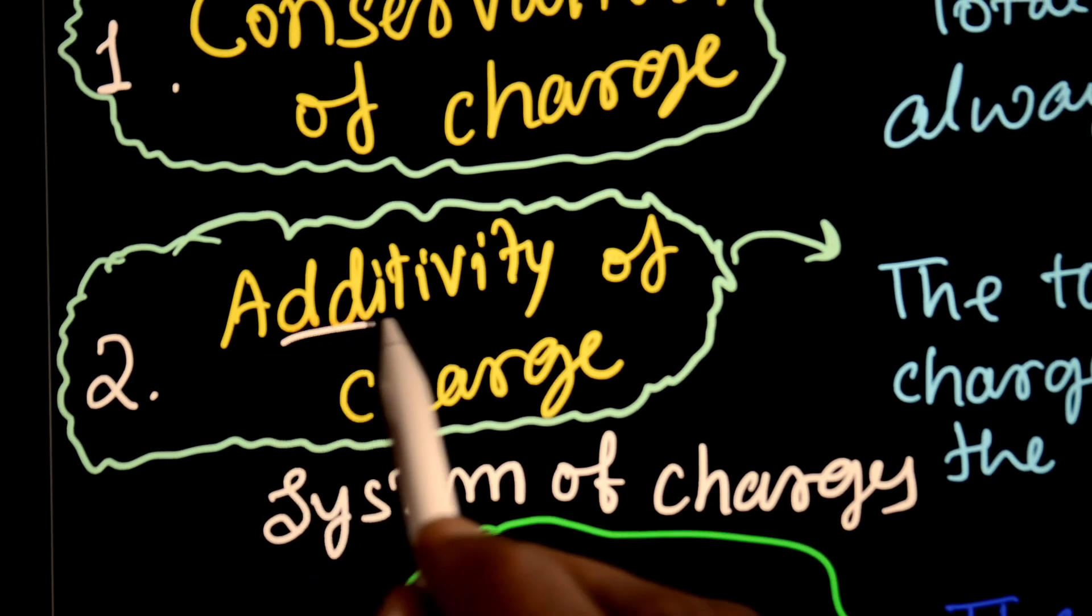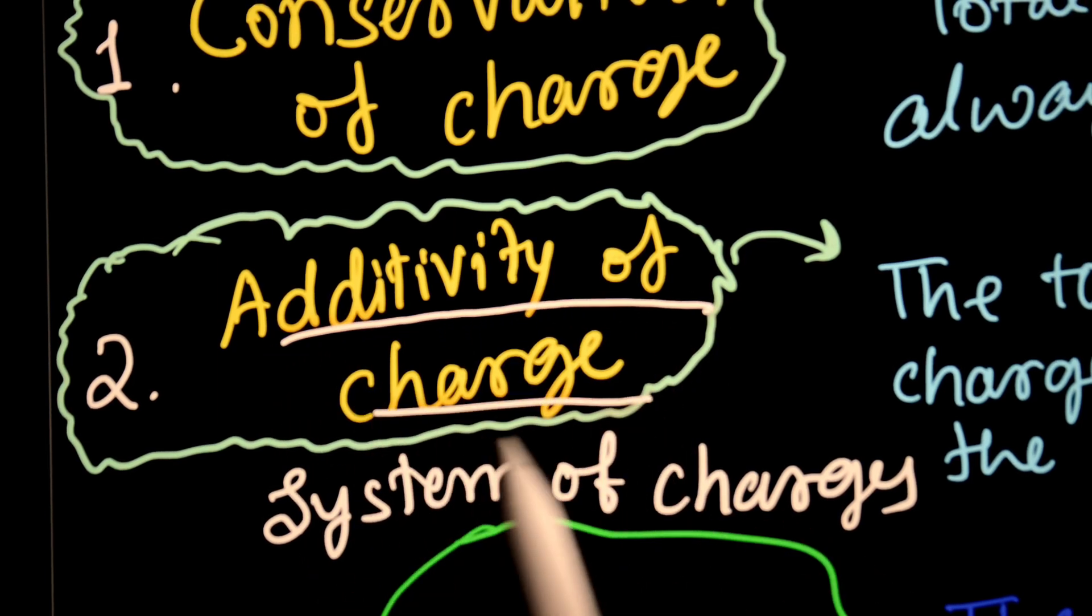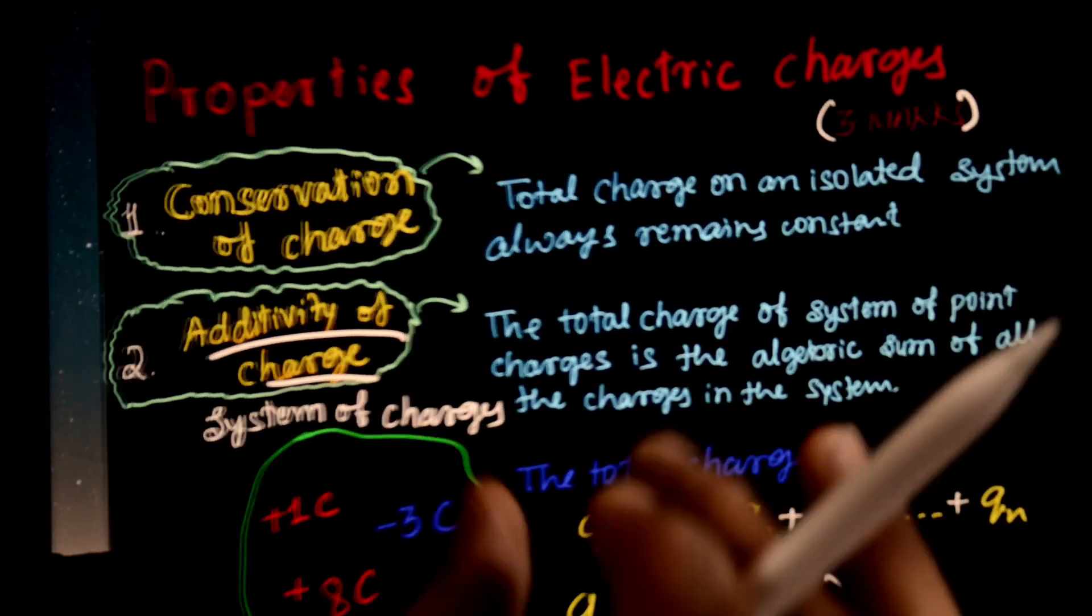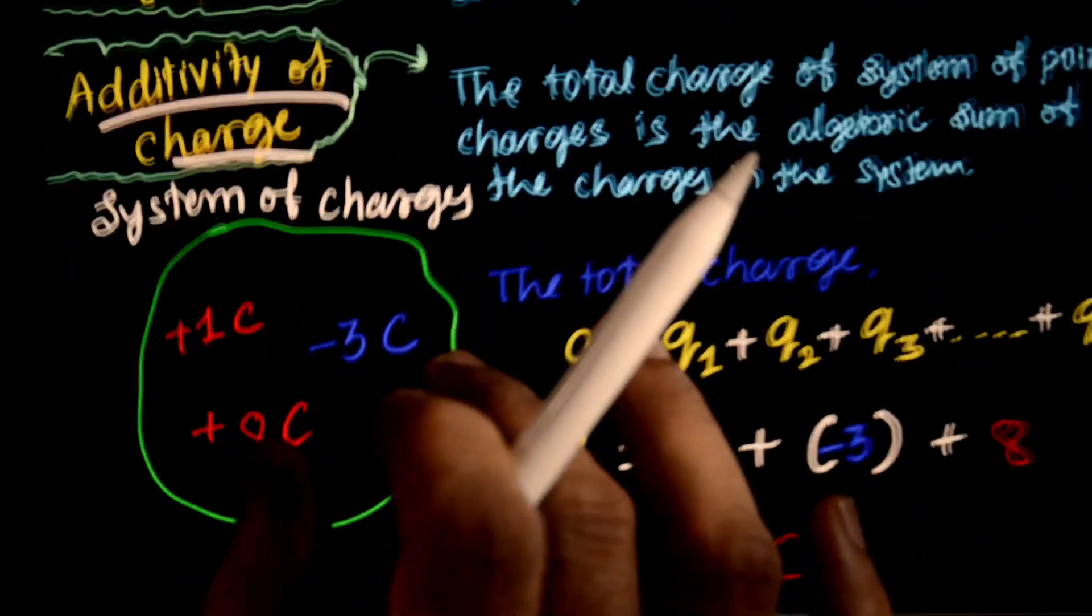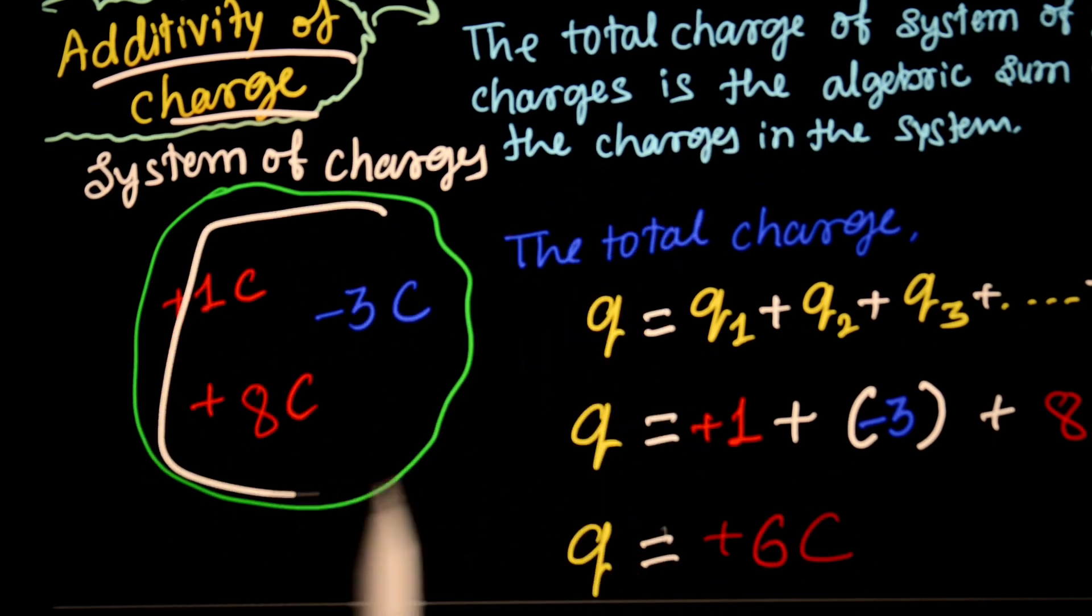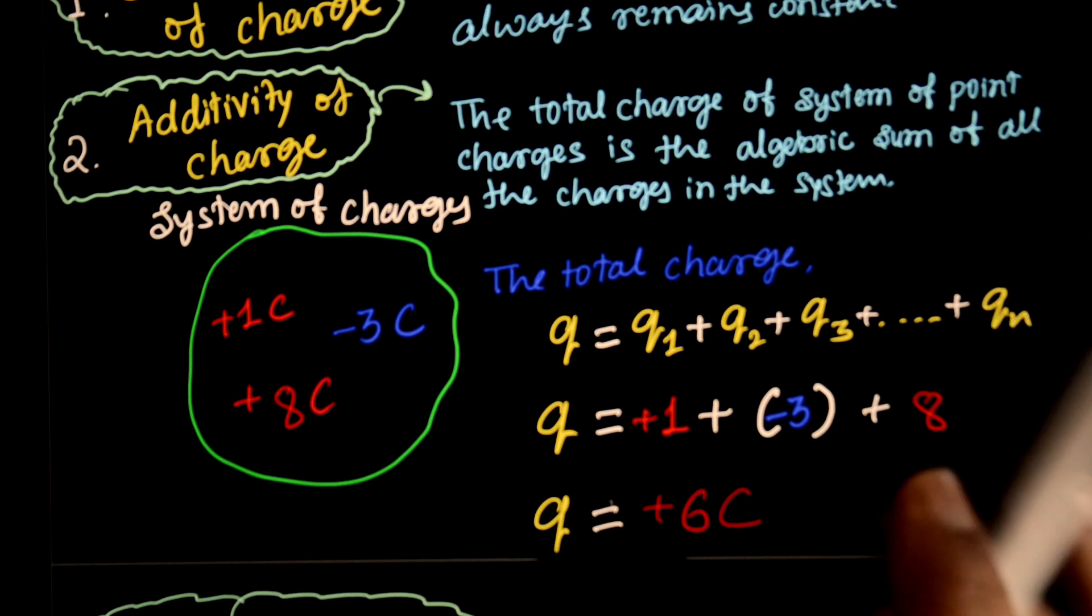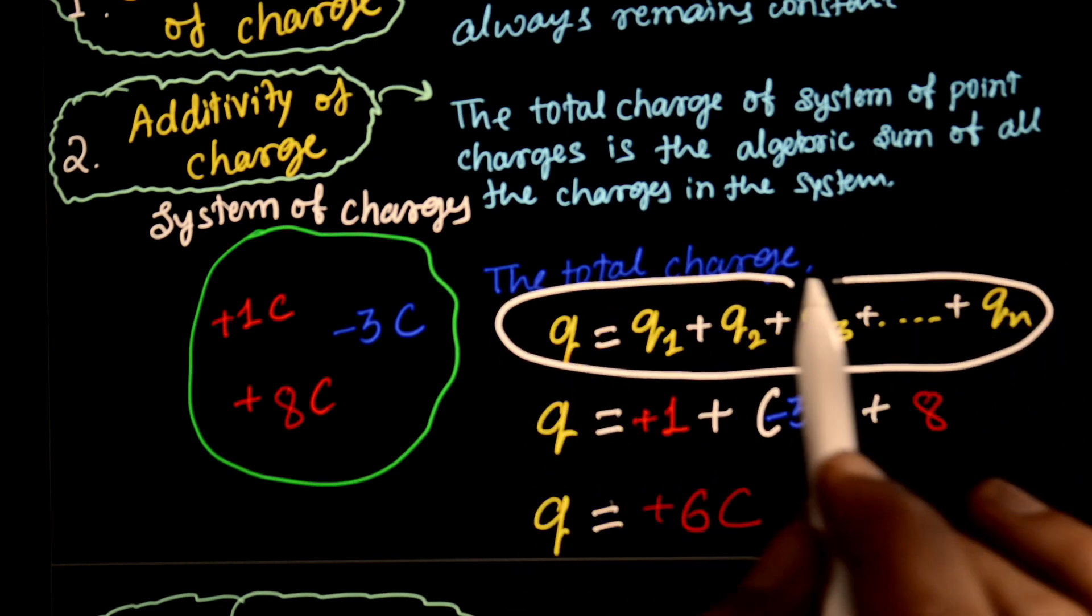Additivity of Charge. The second property is additivity of charge. What do you mean by that? Suppose here is a system. The total charge is the algebraic sum of all the charges in the system.